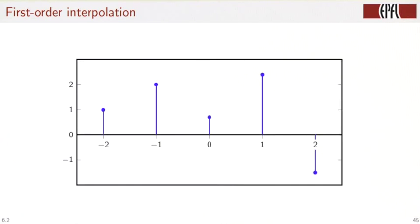It's simply one minus the absolute value of t on the interval minus one to one. The support now is of length two, so it's longer than the previous interpolation kernel,